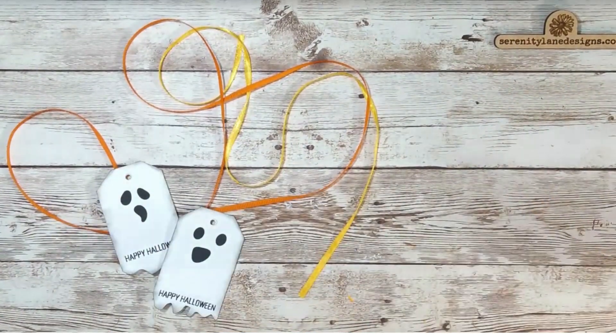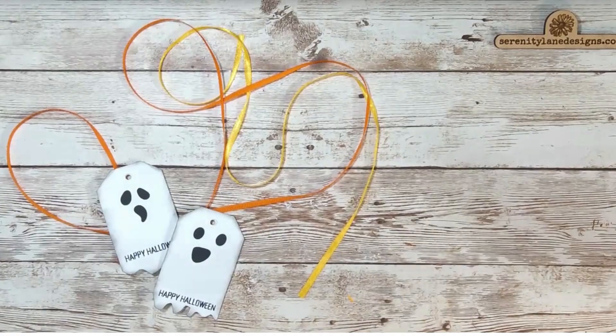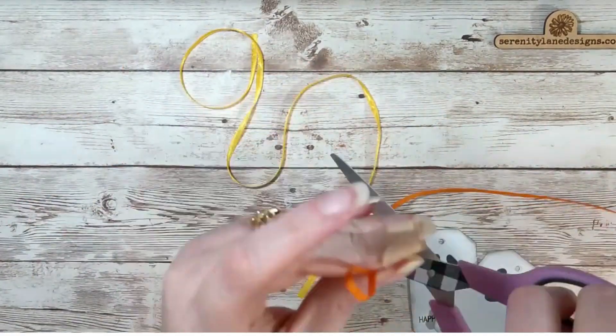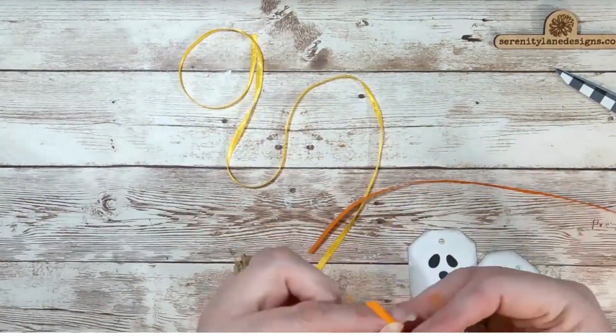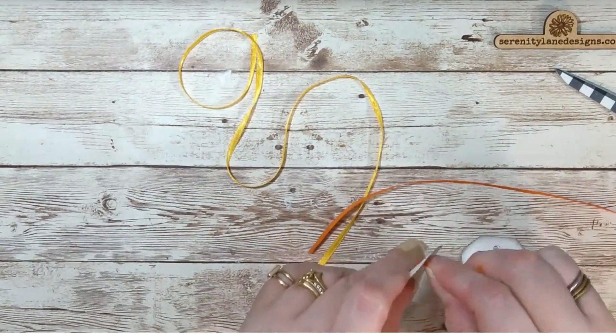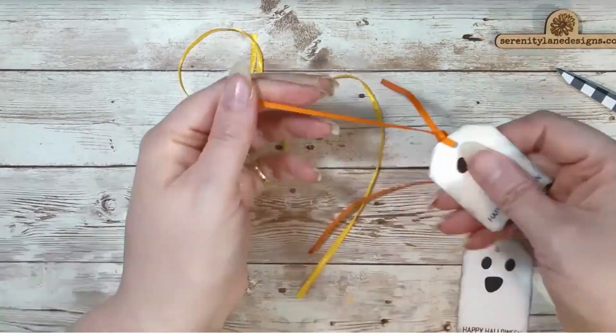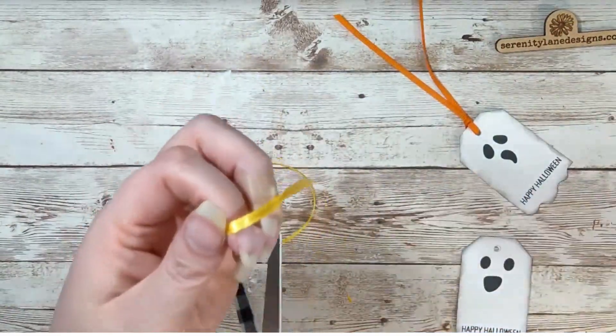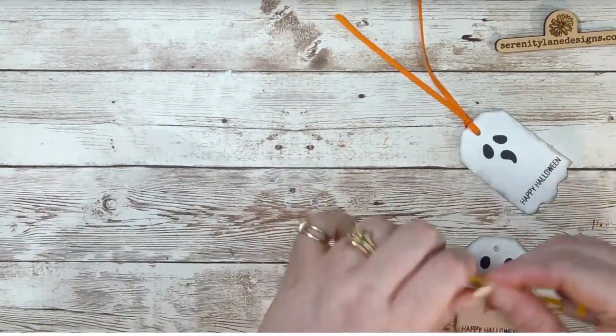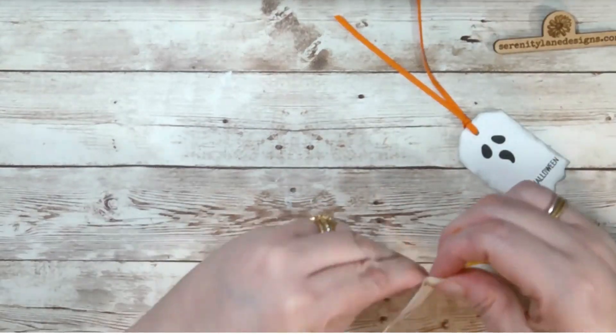And then finally, we just need to attach the ribbon to the tag by folding it in half, putting the loop through the hole and putting the edges through the loop in the back. And there you have it. Some cute little ghost tags that you could add to bags of candy or cookies.